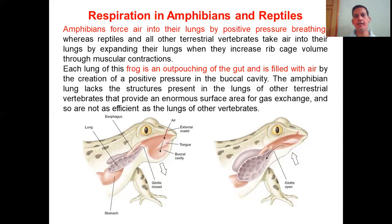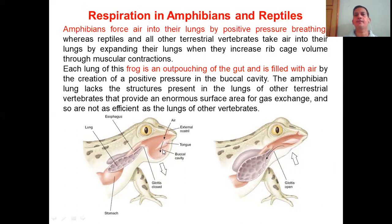Because amphibian lungs are less efficient, these organisms need constant replenishment of their gas exchange system. If you observe any frog or toad, you will see continuous movement of the buccal cavity — this facilitates positive pressure and exchange of gases by the lungs. Moreover, these lungs are not as specialized as in higher organisms.